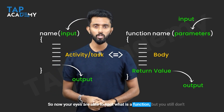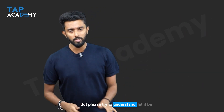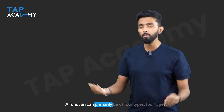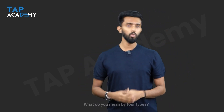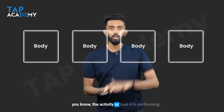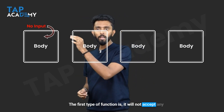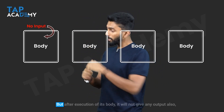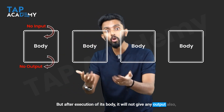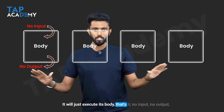Now your eyes are able to spot what a function is. In any programming language, a function can primarily be of four types. The first type of function: it will not accept any input or parameters, and after execution of its body, it will not give any output either. No input, no output. No parameters, no return value. It will just execute its body.